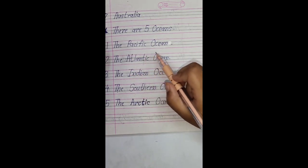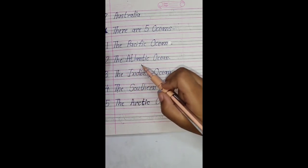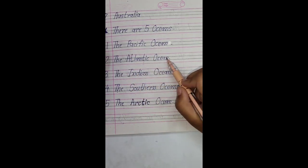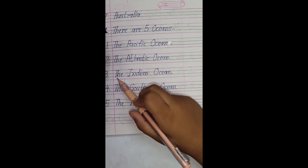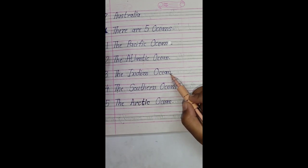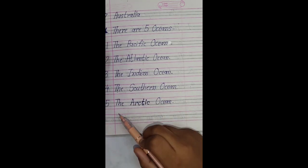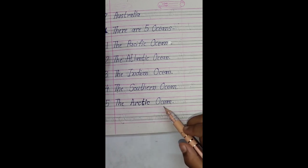There are 5 oceans: the Pacific Ocean, the Atlantic Ocean, the Indian Ocean, the Southern Ocean, the Arctic Ocean.